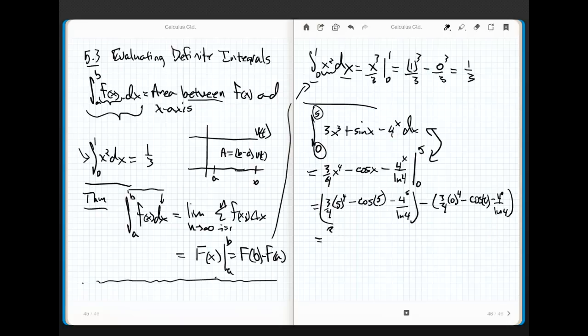This just becomes an algebraic slash numeric thing to do. It's 3 fourths times 625, that's 25 squared, minus cosine of 5, minus 2 to the 10th, so 1,024 divided by ln of 4, minus, well that's cool, that's 0 minus 1 minus 1 over the natural log of 4. And then we just can clean this up numerically, and then my answer is going to be some rounded value. It's going to be approximately some rounded value because this is not going to spit out a rational number. Isn't that cool?